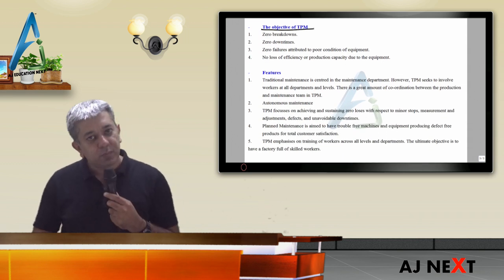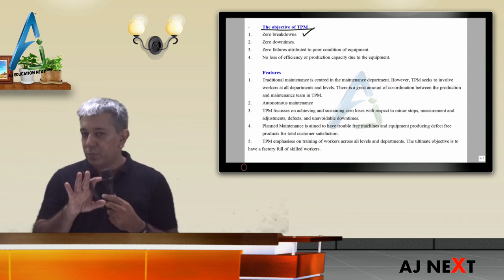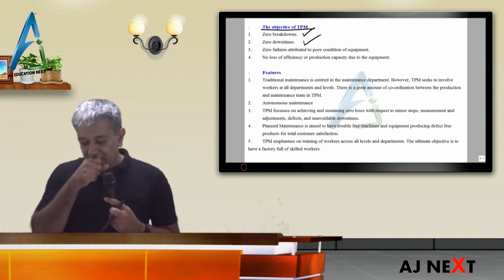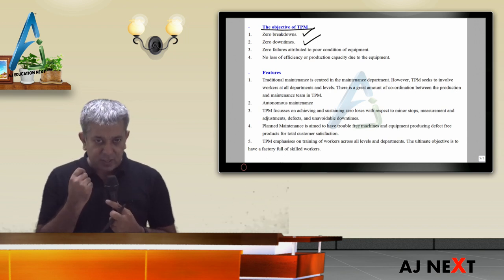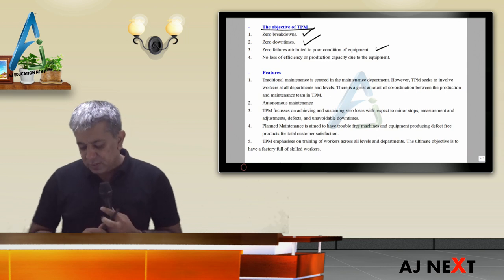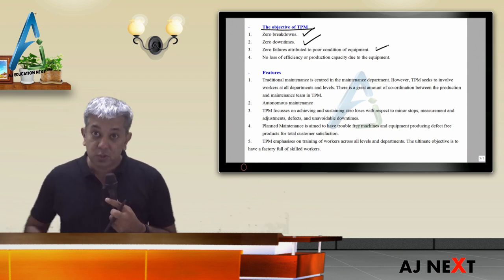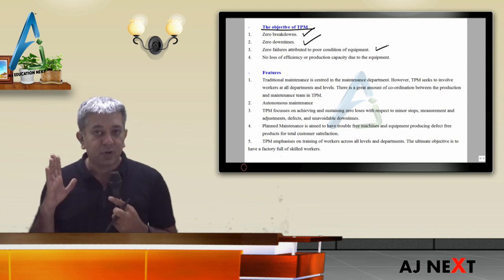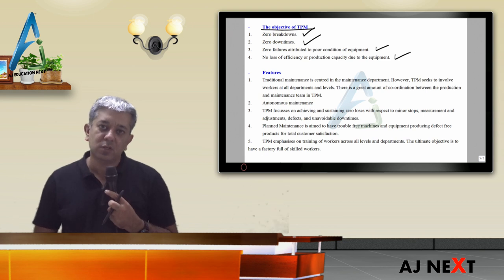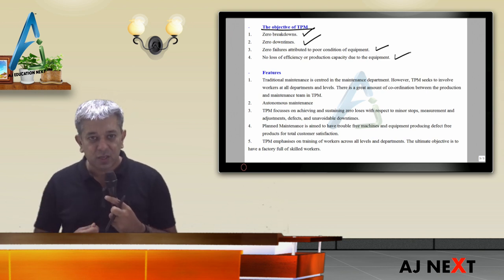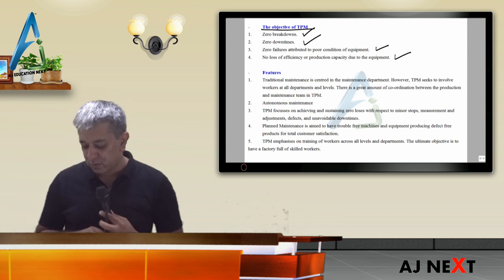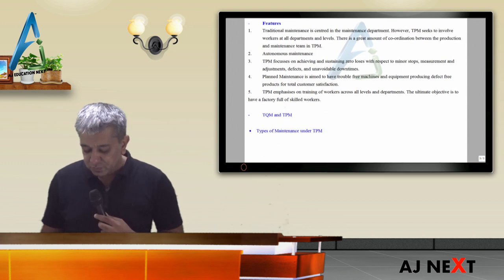What are the objectives of TPM? First, zero breakdown — machines should not break down. Second, zero downtimes — avoid situations where you have to stop machines due to overheating; use good quality machines. Third, zero failures due to poor condition of machines — machines should produce products properly, no faulty products. Fourth, no loss of efficiency for workers — for example, if a machine handle is rusted, operating it requires excessive effort, which indicates things are not working properly.